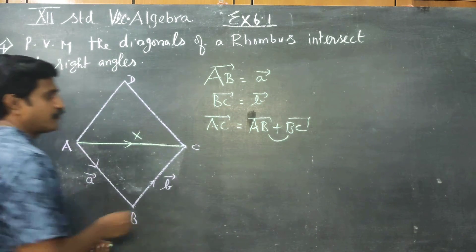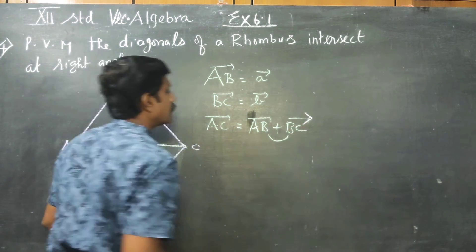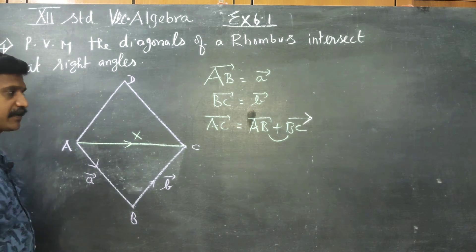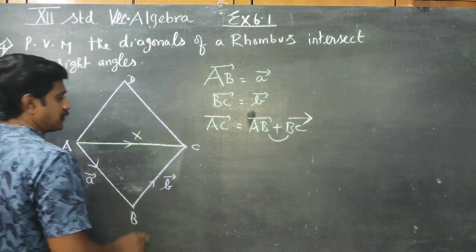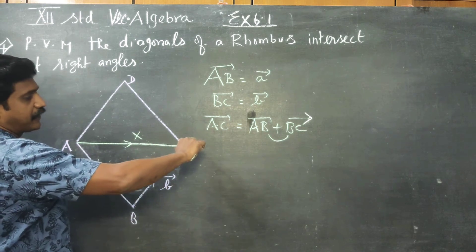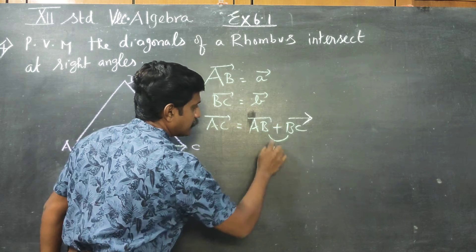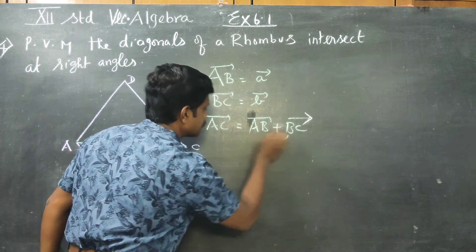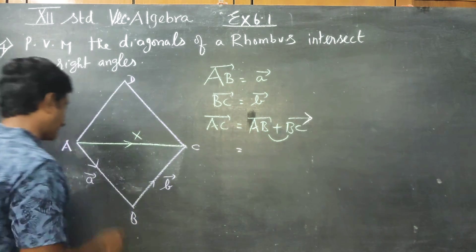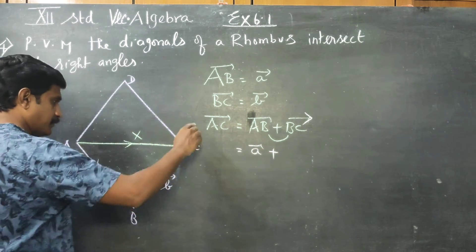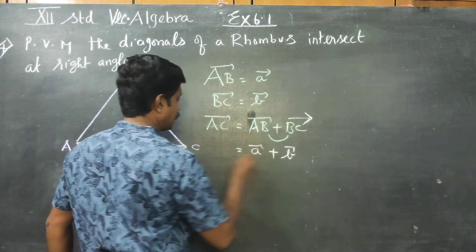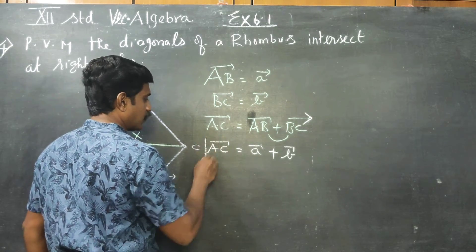This is your formula, triangle law of addition: AC vector is equal to AB vector plus BC vector. What is AB vector? a vector. BC vector is b vector. This is my AC, this is one of my diagonal.